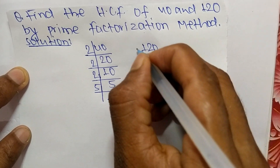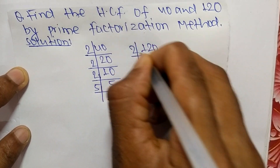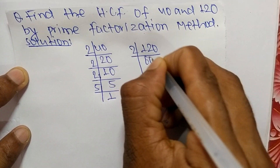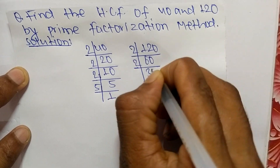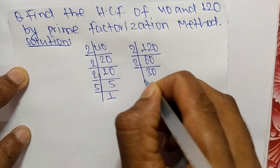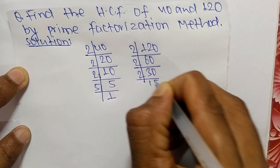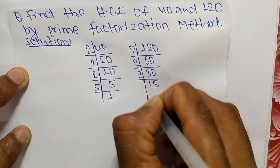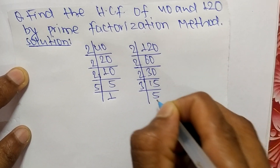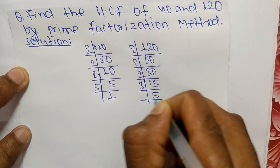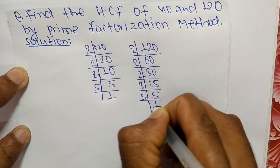Now the prime factors of 120 are: 2 times 60 equals 120, 2 times 30 equals 60, 2 times 15 equals 30, 3 times 5 equals 15, and 5 times 1 equals 5.